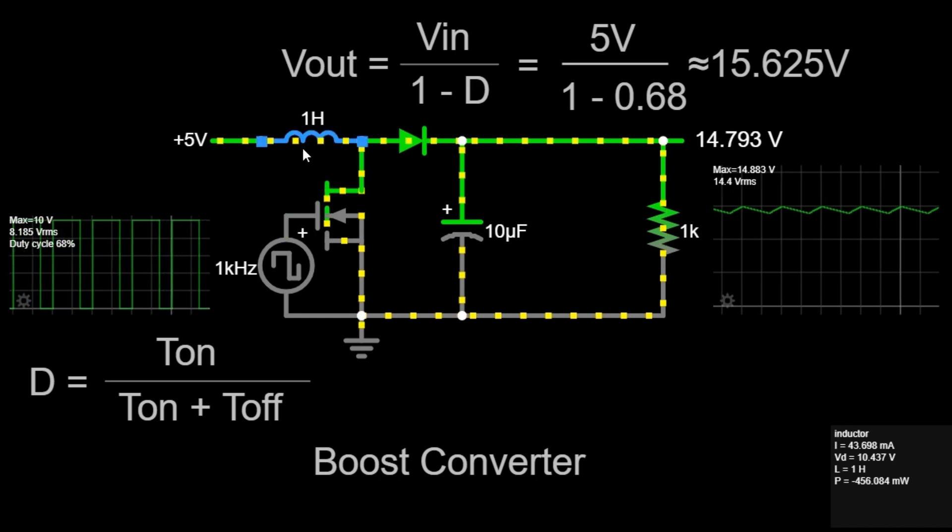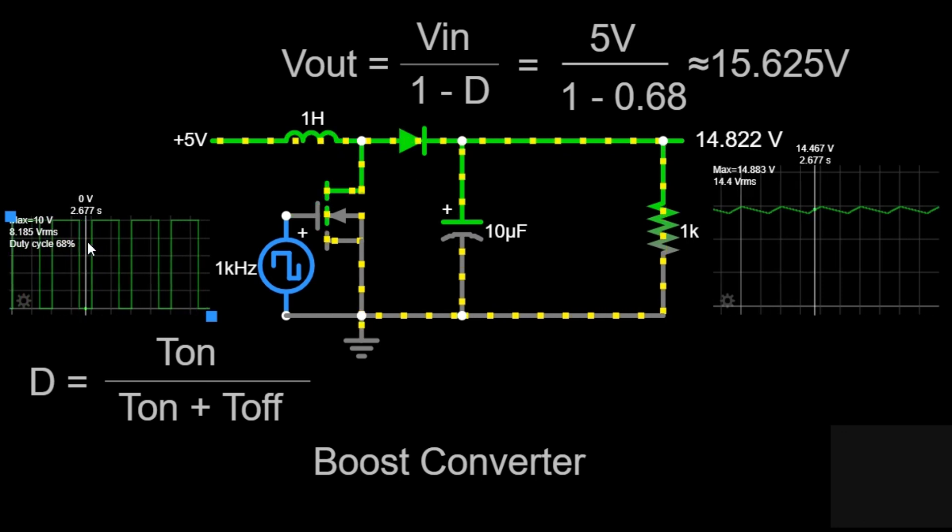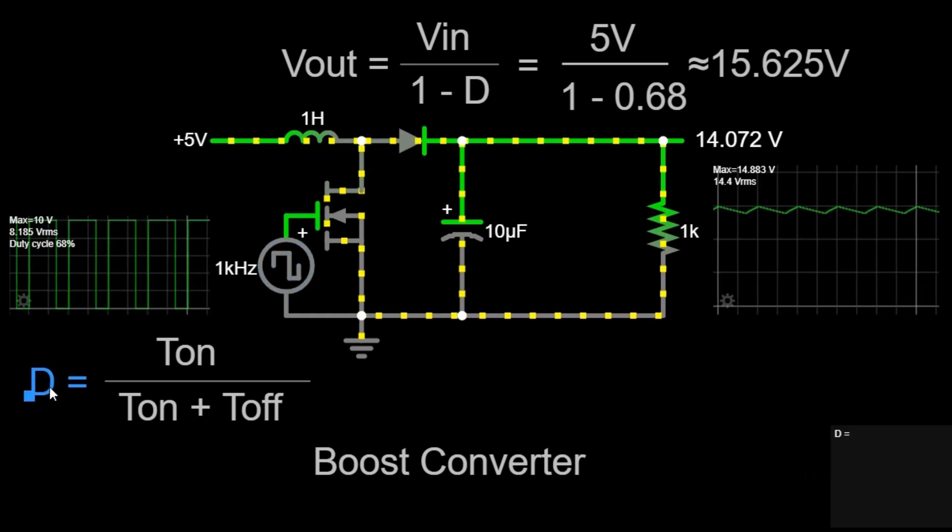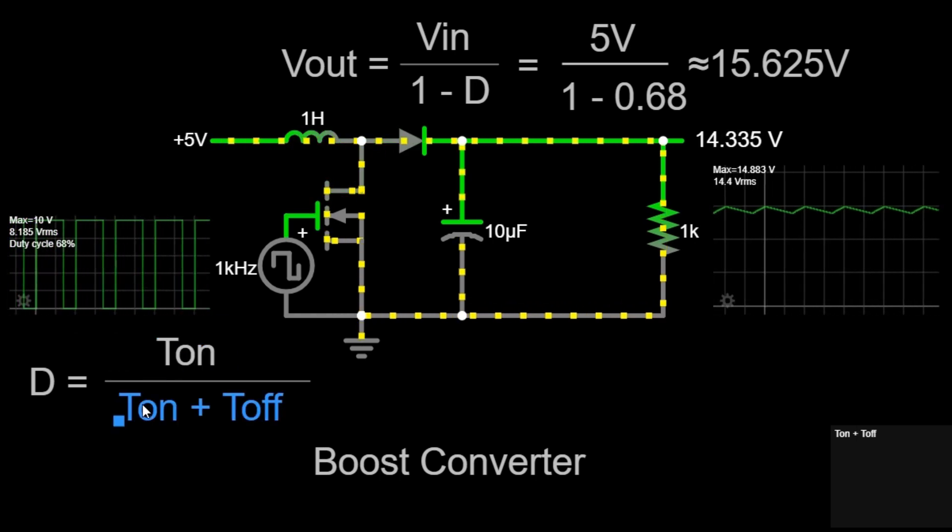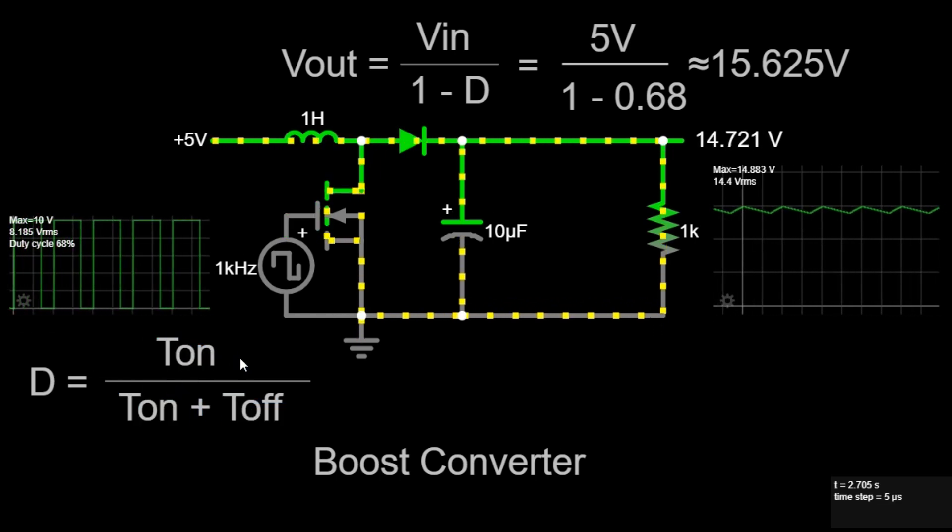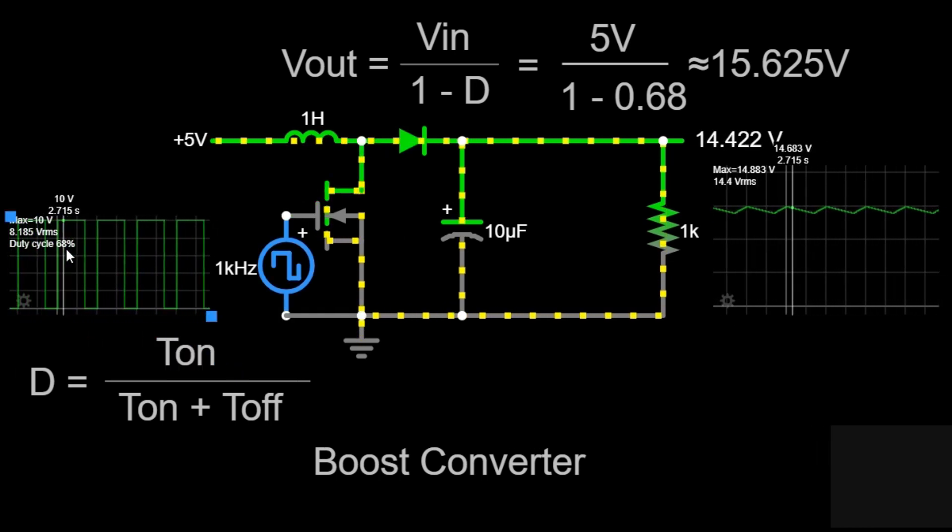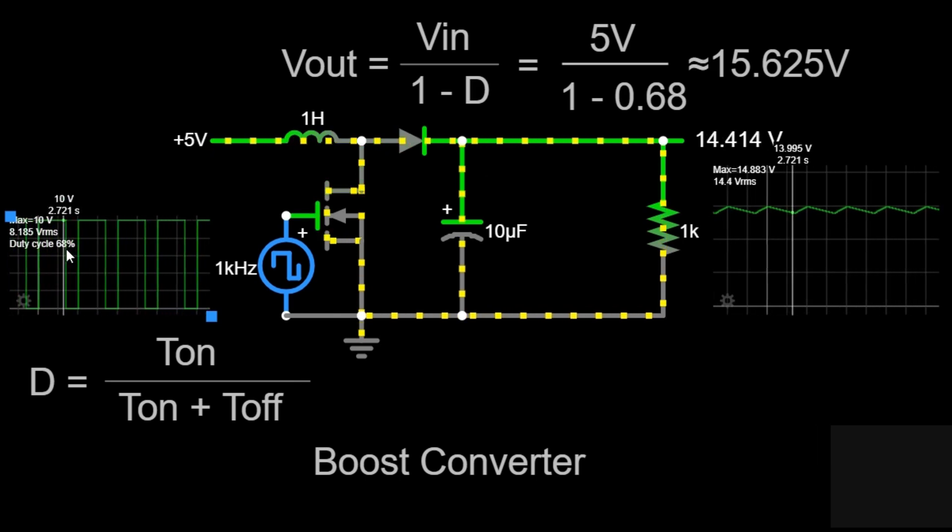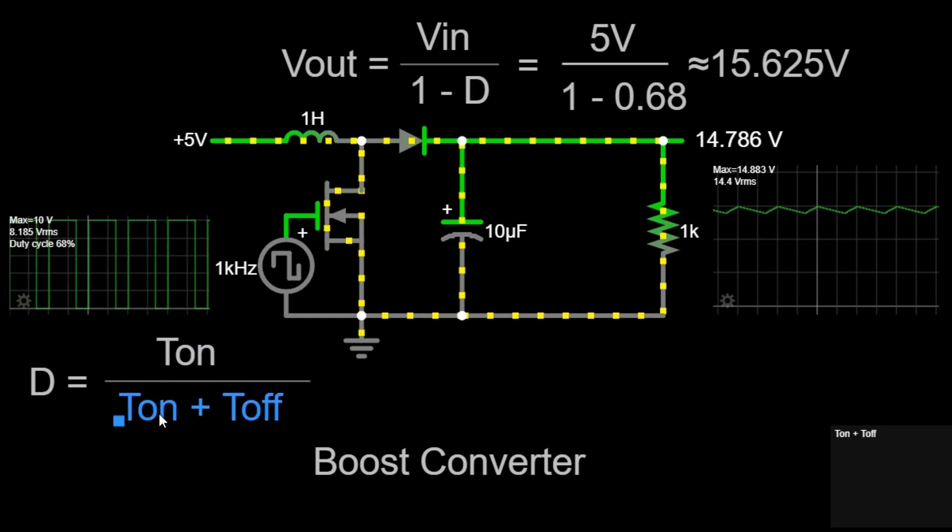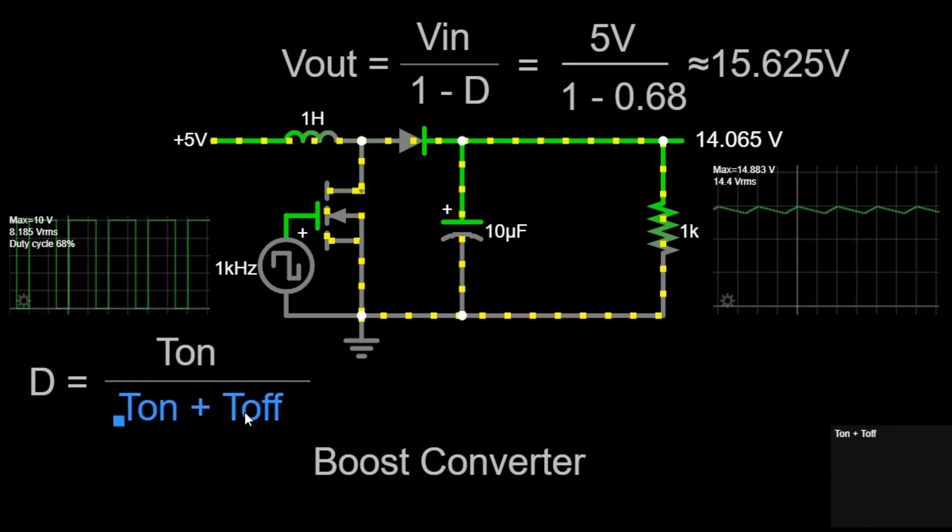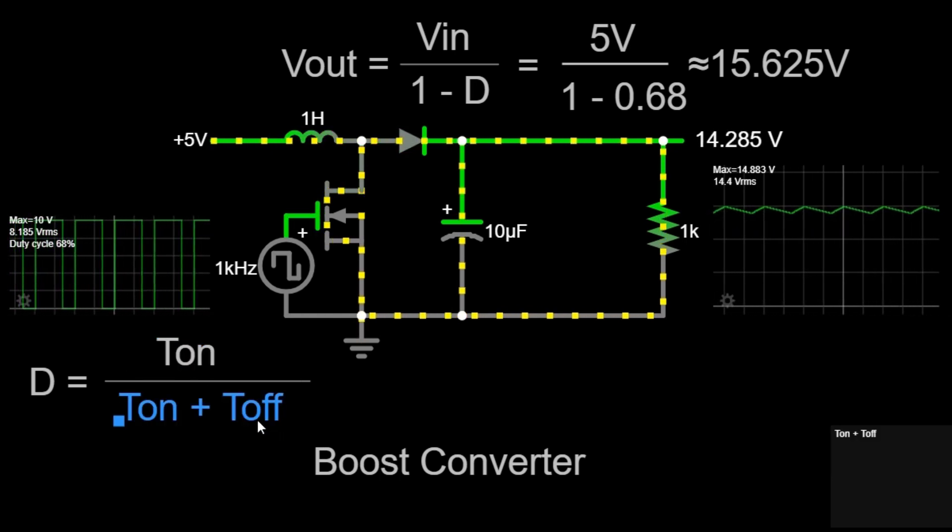The duty cycle, represented by d, is crucial in determining the output voltage. It is the ratio of the time the switch is closed to the total switching period. For our circuit, the duty cycle is 68%. The duty cycle controls how long the switch is closed compared to the total time period of one cycle. d equals t on divided by t on plus t off, where t on is the time the switch is closed and t off is the time the switch is open.